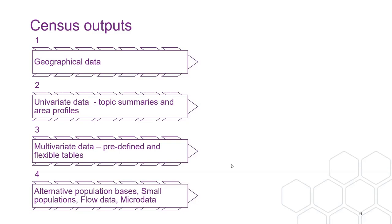In 2001, work was done on developing more homogenous areas — output areas with similar types of characteristics. That work defined output areas and built two other area types using them as building blocks. This has been maintained for 2011 and 2021. There have been some changes over that time, but the aim was to minimise change, and overall the change in each census year has been less than 5%.